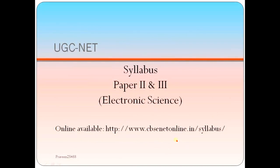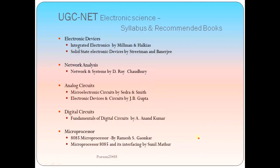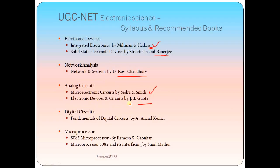Here is the syllabus for Paper 2 and Paper 3, particularly for Electronic Science, also available online. For electronic devices, the book 'Integrated Electronics' by Millman and Halkias covers all the basic concepts and is more than enough. For network analysis, D. Chaudhary is the best book. For analog circuits, S.T.R. Smith can also be used for electronic devices. Another option is 'Electronic Devices and Circuits' by J.B. Gupta.